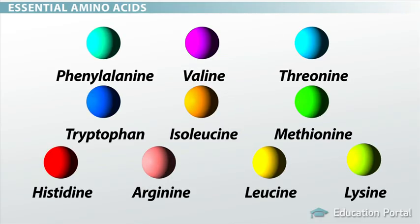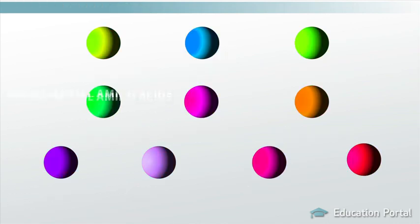Did you notice that most of our amino acids end in I-N-E? This is not a hard and fast rule for naming these substances, but you should keep this in mind because it can be a helpful clue when identifying essential and non-essential amino acids. Now, let's take a look at the remaining ten amino acids, which are the non-essential ones.